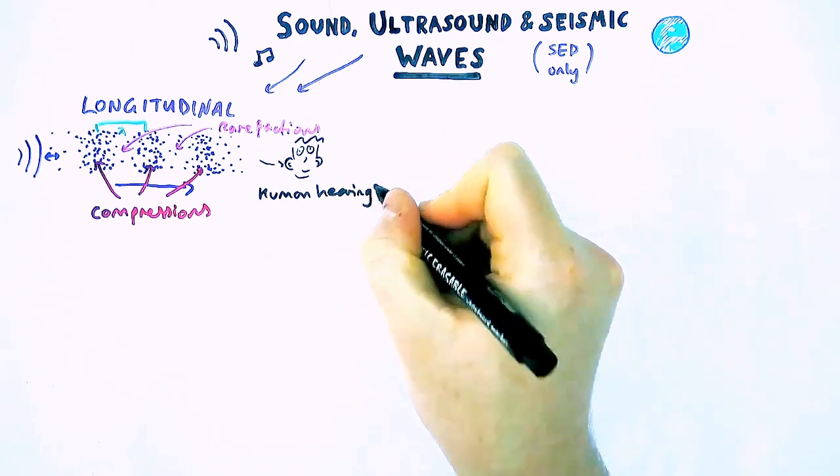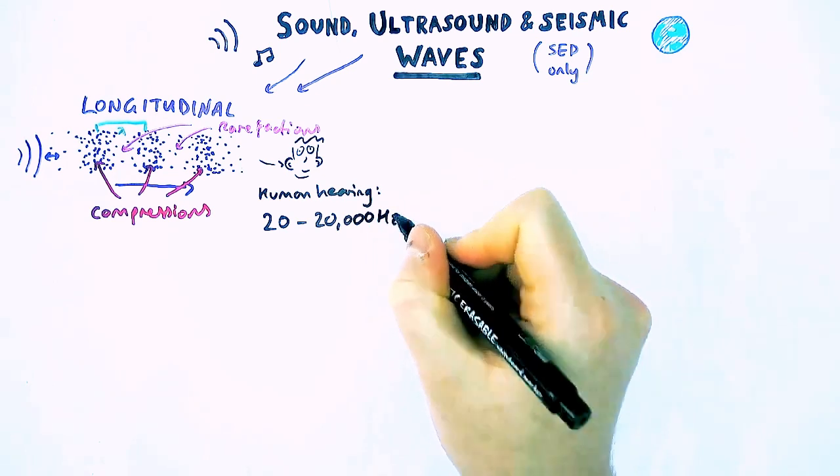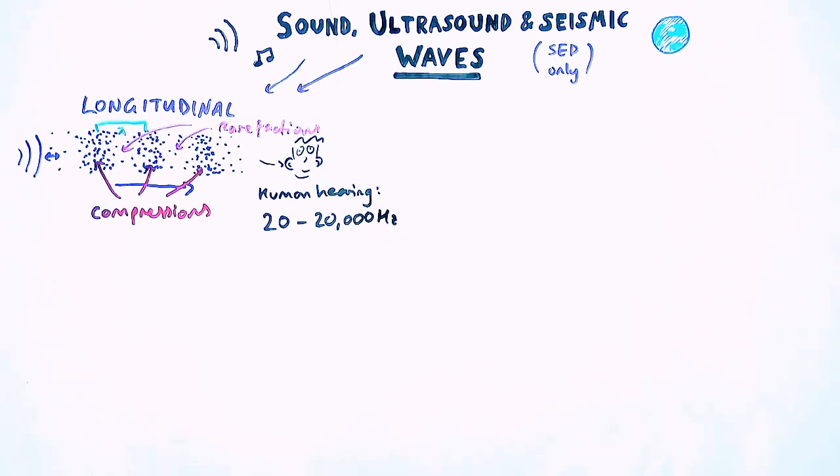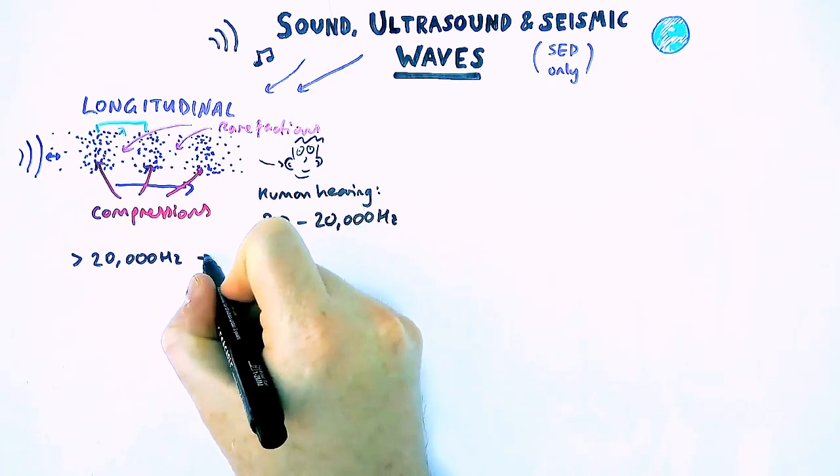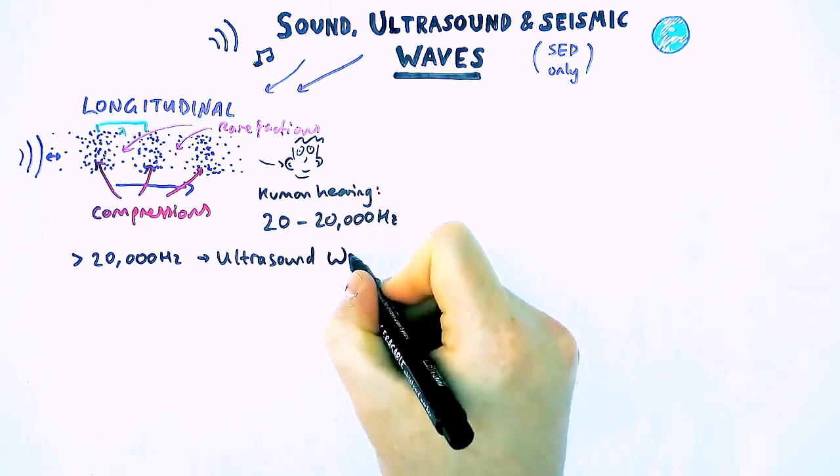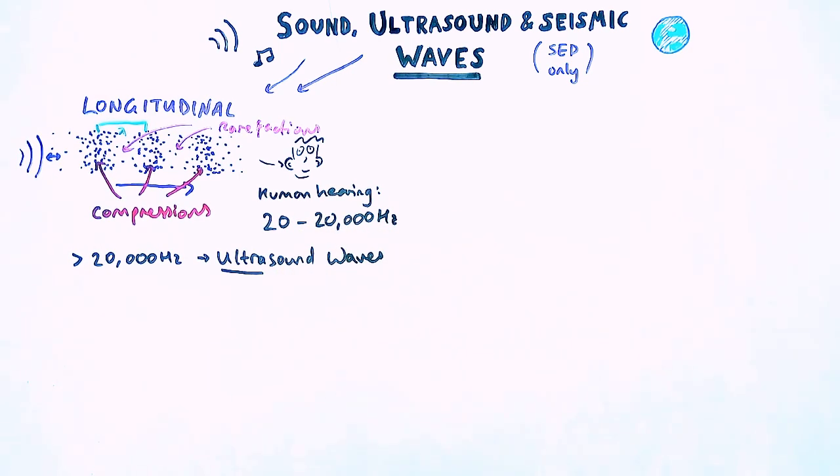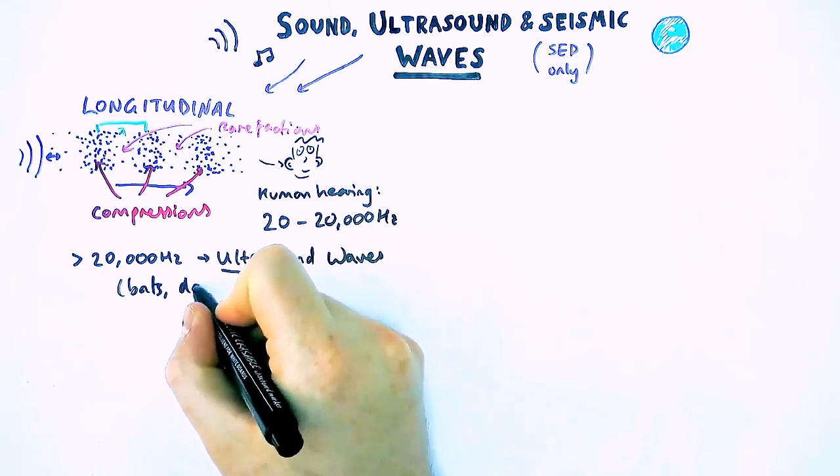Now human hearing only occurs between 20 hertz and 20,000 hertz. Anything outside of that, humans cannot hear. It is called ultrasound waves, kind of meaning extra sound waves. Now humans can't hear those types of waves, however, bats and dogs and certain other animals can.